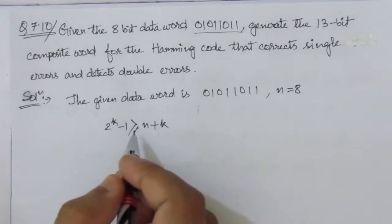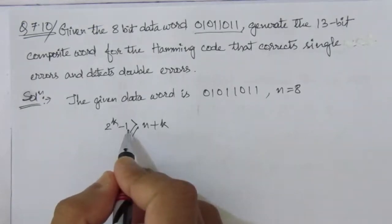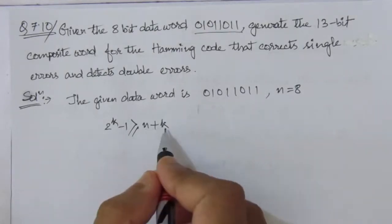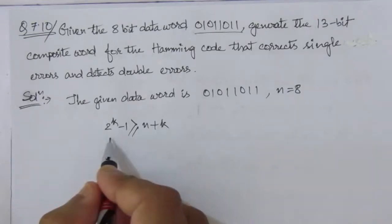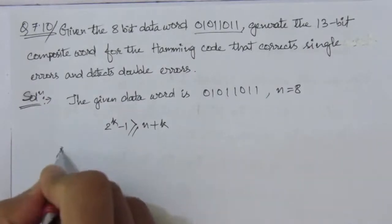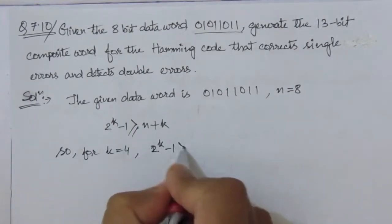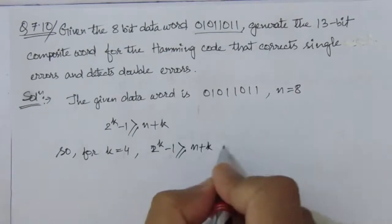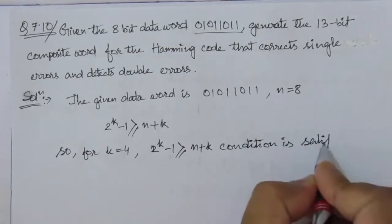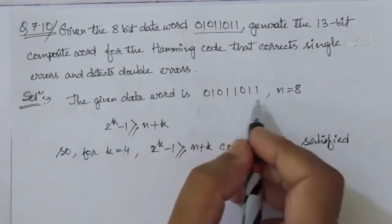Similarly k equals 2 and 3 also do not satisfy the condition. For k equals 4, 2 to the power 4 is 16, and 16 minus 1 is 15. On the right-hand side we have 8 plus 4 equals 12. Since 15 is greater than 12, we can use four parity bits. So the condition 2^k − 1 ≥ n + k is satisfied, and the lowest valid value of k is 4.